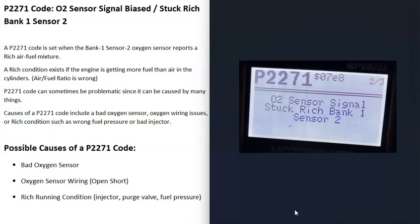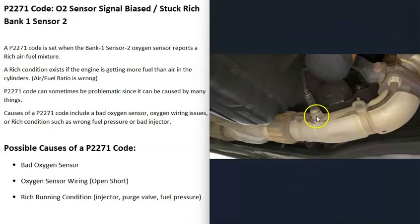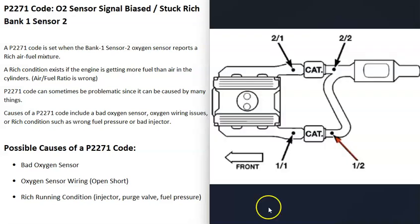The first thing that could cause this is a bad oxygen sensor, mainly the bank one sensor two O2 sensor. It might have failed and gone bad and be reporting incorrect information back to the computer. There are usually two O2 sensors on each bank of the engine, sometimes more like three, but usually two.